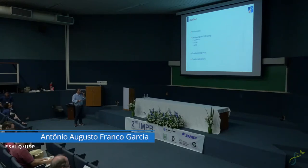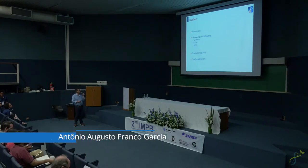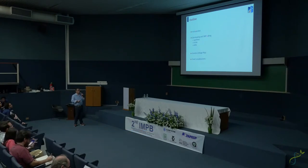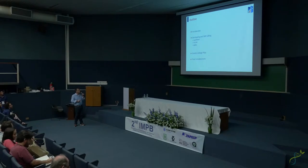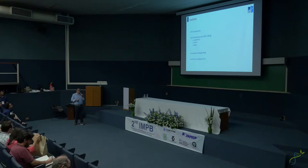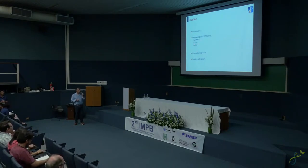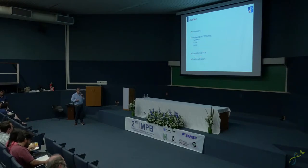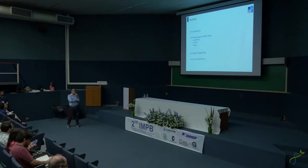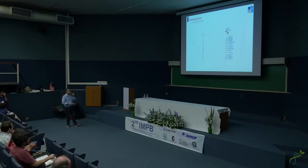Here is an outline of my talk. I will say a few words about an introduction to polyploids, then we will spend some time discussing how to genotype and how to make the SNP calling in auto-polyploids, which is different from diploids. Then we go to the genetic linkage map, which has been keeping us very busy because it is a very complicated issue. And then final considerations about the research subject.